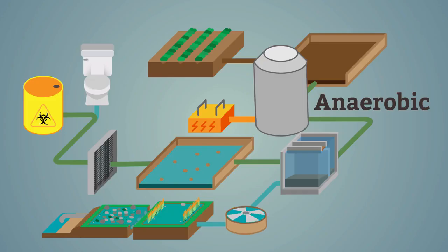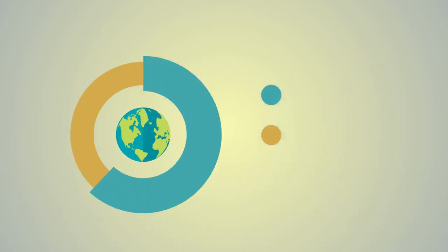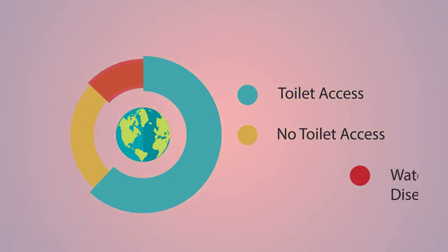In this video we trace what happens to human sewage. More than a third of the world's population does not have access to toilets that ensure human waste is kept separate from human contact. In consequence, millions of people die every year from waterborne diseases.